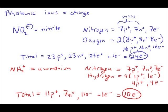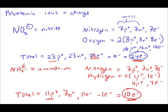Remember that adding protons plus electrons should total the charge. For the nitrite ion: 23 protons plus 24 electrons — positive 23 minus 24 gives a total charge of minus one. For the ammonium ion: plus 11 from the protons minus 10 from the electrons gives that total charge of plus one for the ammonium ion.